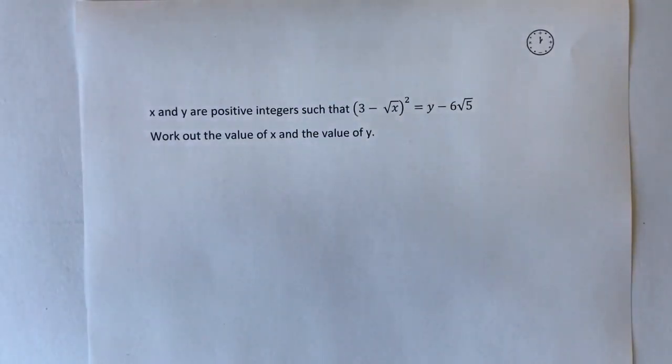We're going to work out the values of x and y. On the surface it seems a little bit daunting but it's not too bad once you get used to what they're asking you to do. So the first thing I'm going to do is look at the left hand side and take 3 - √x and square it.